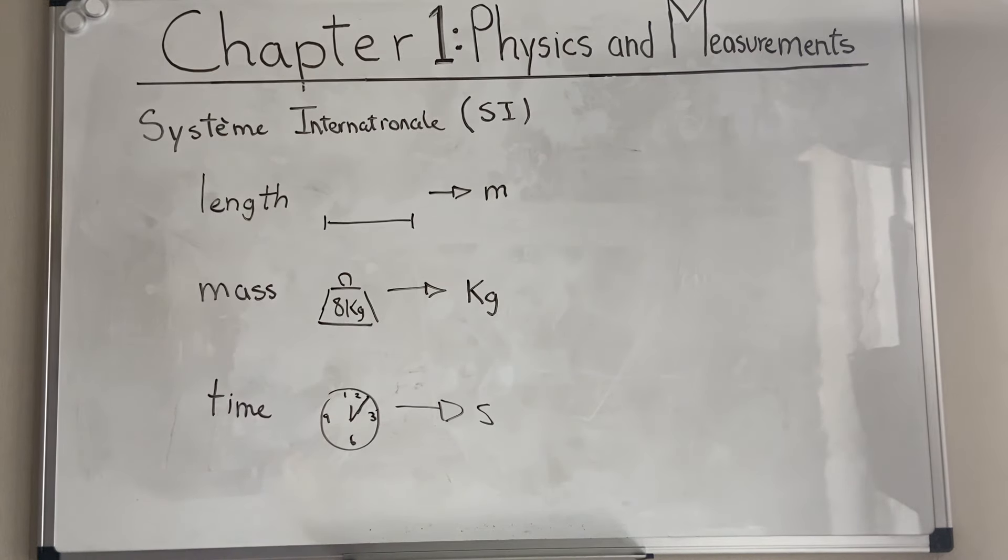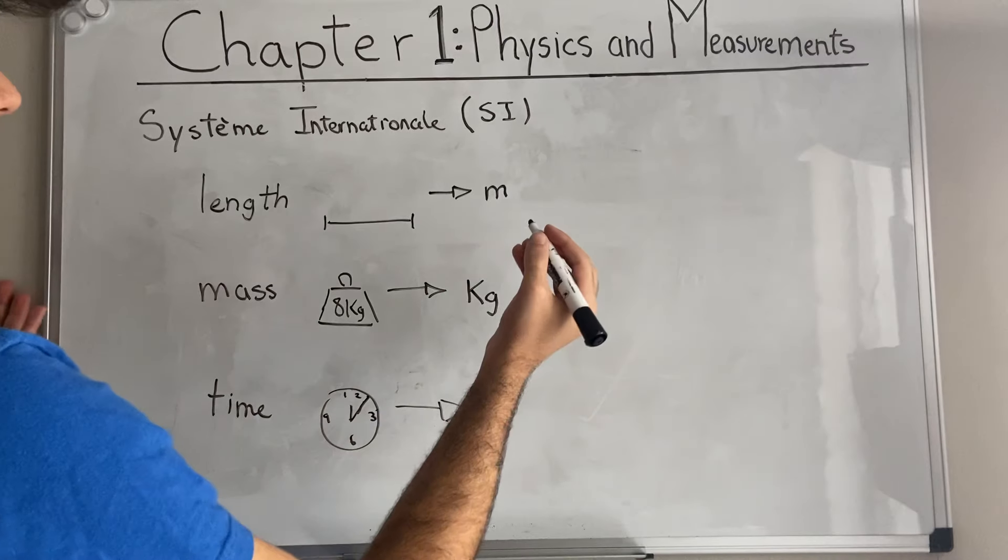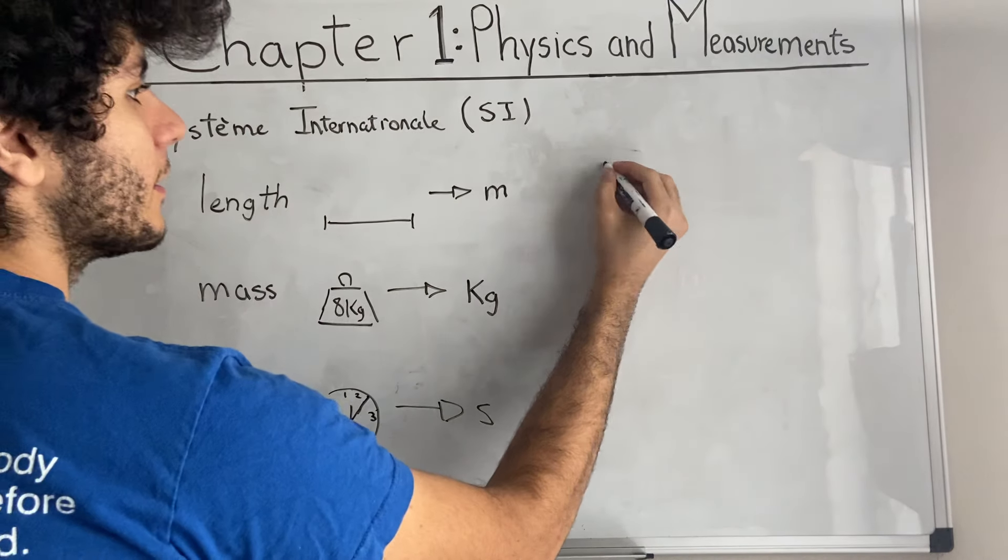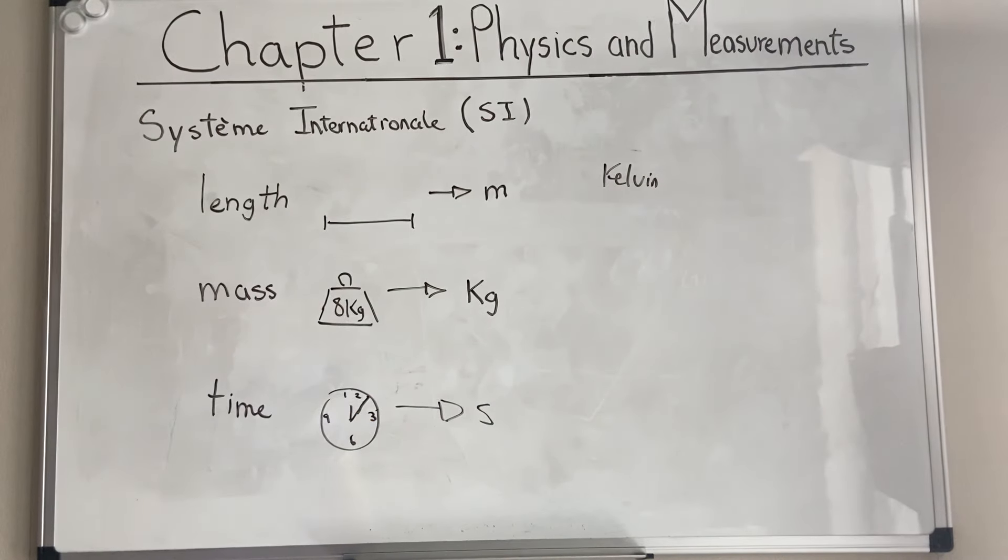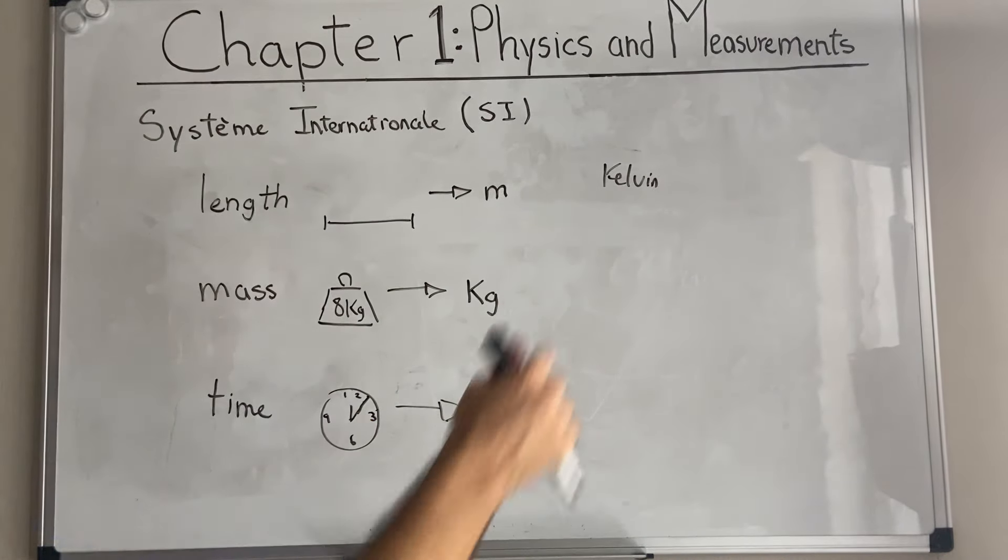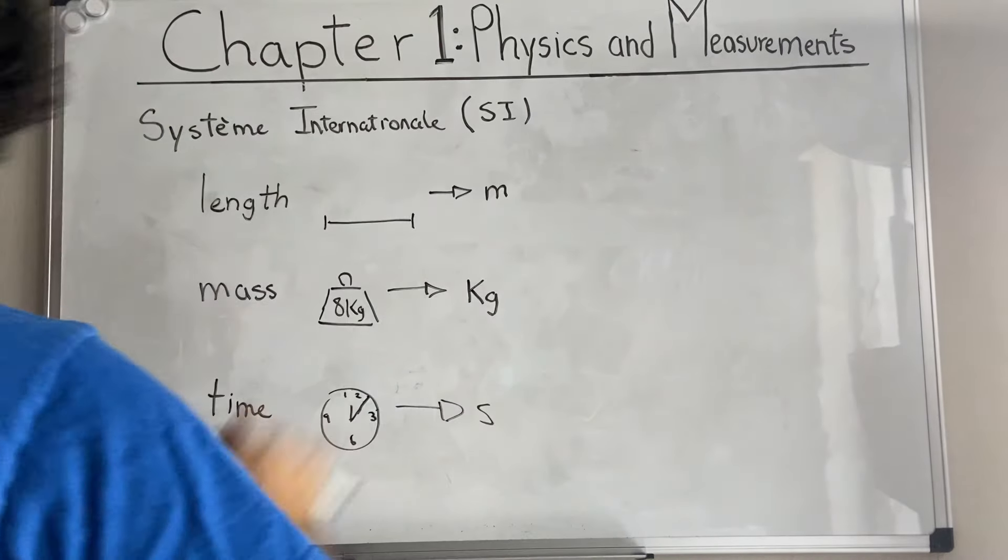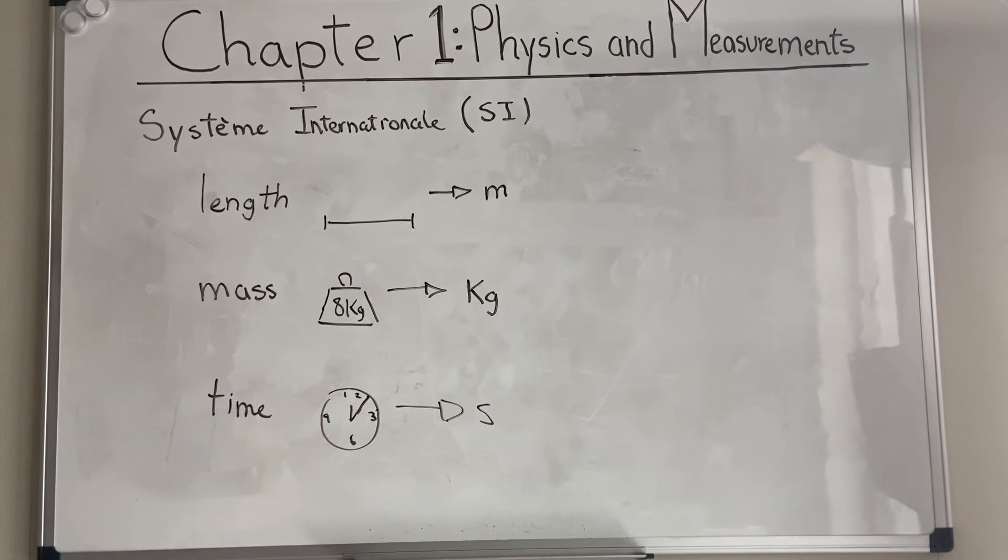There are a number of other measurements, such as temperature, for which the SI unit would be Kelvin. But we're not going to deal with that in this class, at least for these first few chapters. With these three units, we can measure all quantities in mechanics in terms of these three base units: meters, kilograms, and seconds.